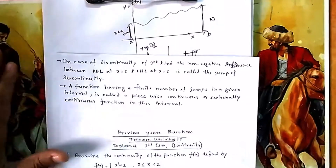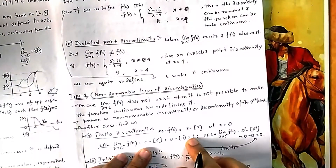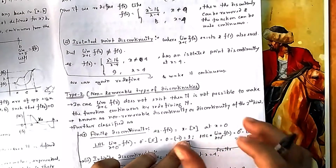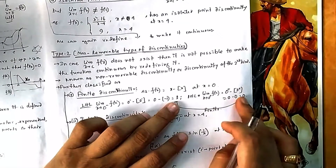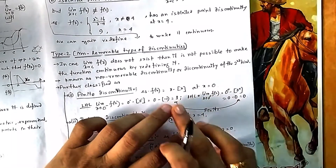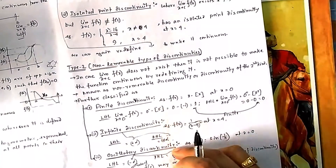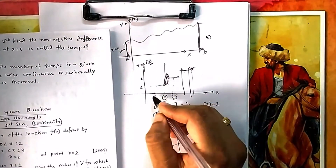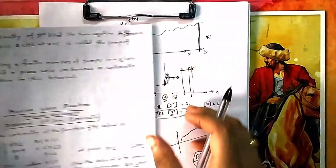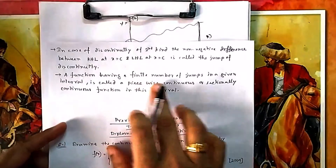For Type 2 discontinuity, the non-negative difference between the LHL and RHL is called the jump of the discontinuity. In this graph, LHL is −2 and RHL is 0, so the jump is 2 — but wait, for the greatest integer function example, LHL is −1 and RHL is 0, so the jump is 1. The greatest integer function jumps by 1 at each integer, which is why it has a jump of 1. The function has finite number of jumps of discontinuity of second kind.